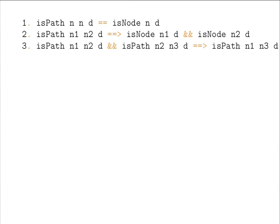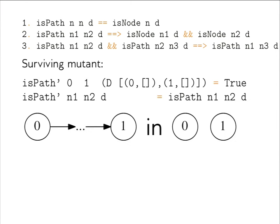Let's put those properties up and see what FitSpec reports as a surviving mutant. It reports an `isPath` function that in most cases returns the correct result but in one specific case returns the wrong answer — this function lies and tells us there is a path from 0 to 1 in a graph where 0 is disconnected from 1, and there is no such path.